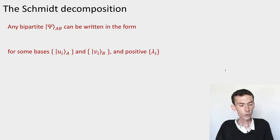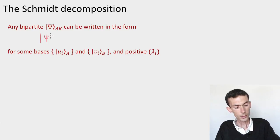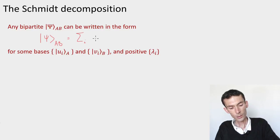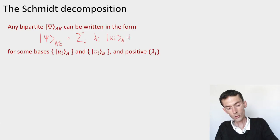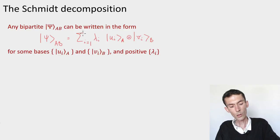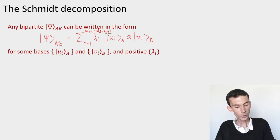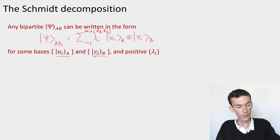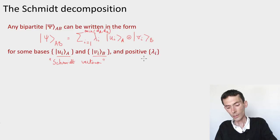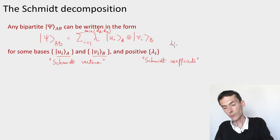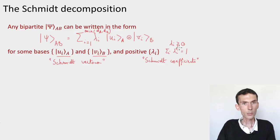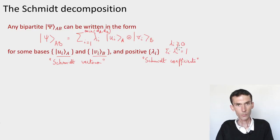Here's the theorem. The Schmidt decomposition states that if you take any pure bipartite state |ψ⟩_AB, then this state can be written as the sum over i of λ_i |u_i⟩_A ⊗ |v_i⟩_B. The index i ranges from 1 to the minimum of the dimension of A and the dimension of B. The vectors u_i and v_i are orthonormal sets — one a basis for A and one for B — called the Schmidt vectors. The λ_i are called Schmidt coefficients; they are non-negative and their squares sum to one, ensuring the state is normalized.